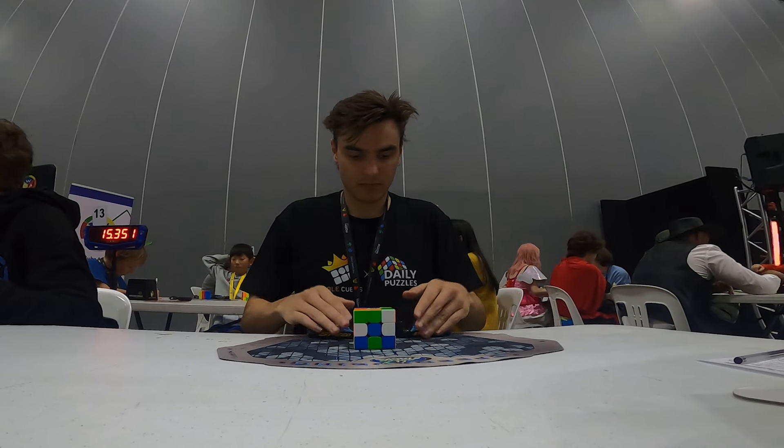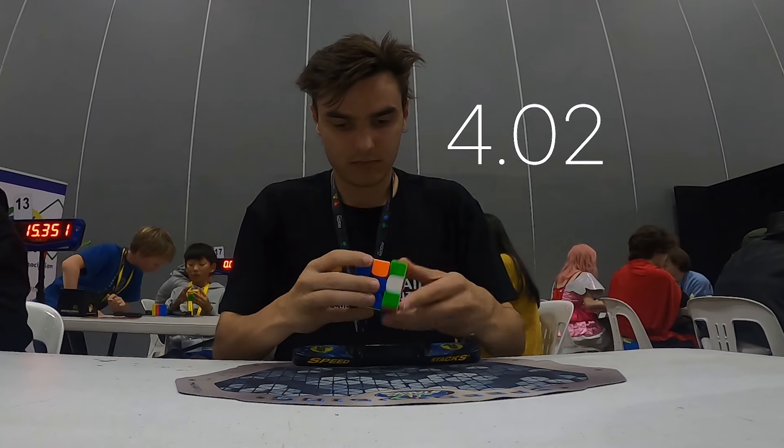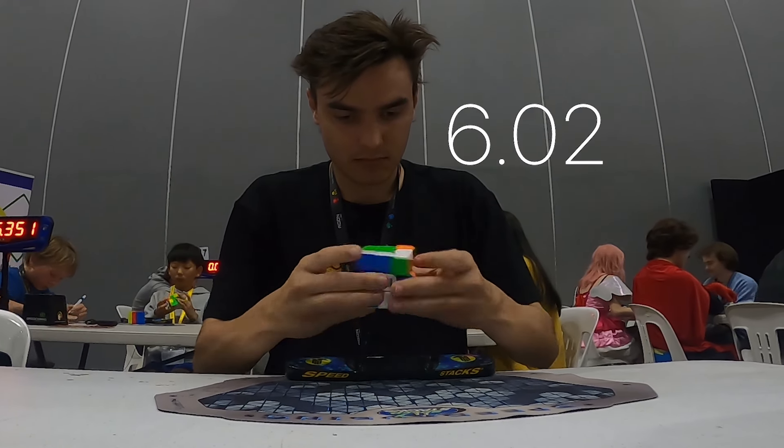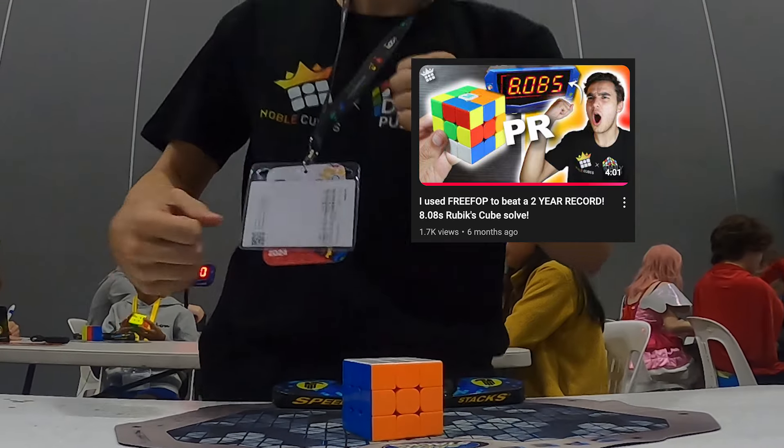G'day guys, welcome back to another video. So my fastest 3x3 Rubik's Cube time in competition is currently 8.08 seconds, which I got at a random competition at the start of this year. Really lucky scramble, and I've already shown how I got that solved.